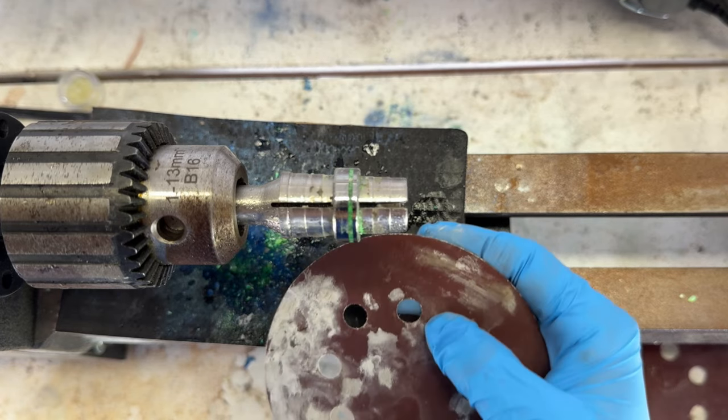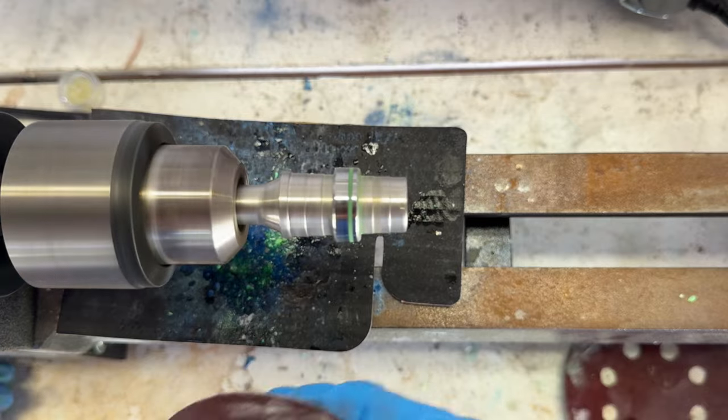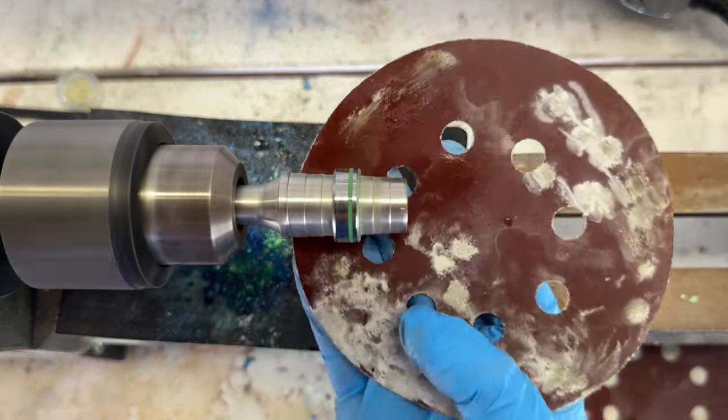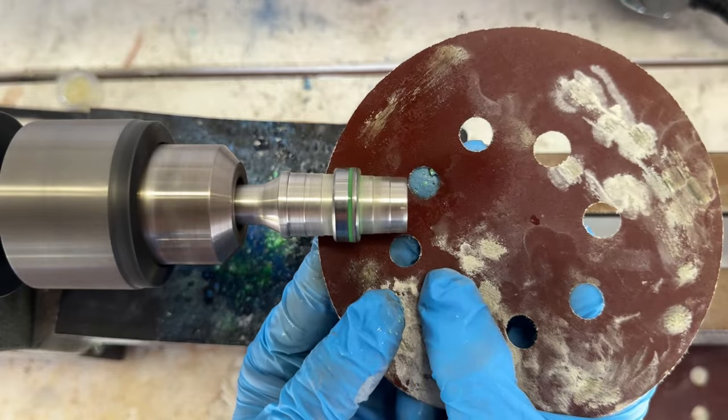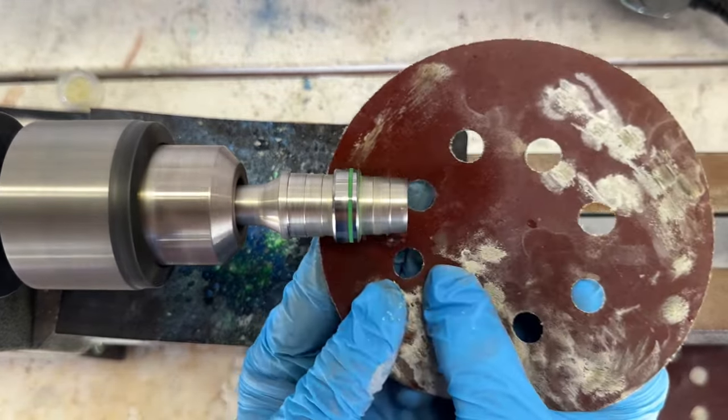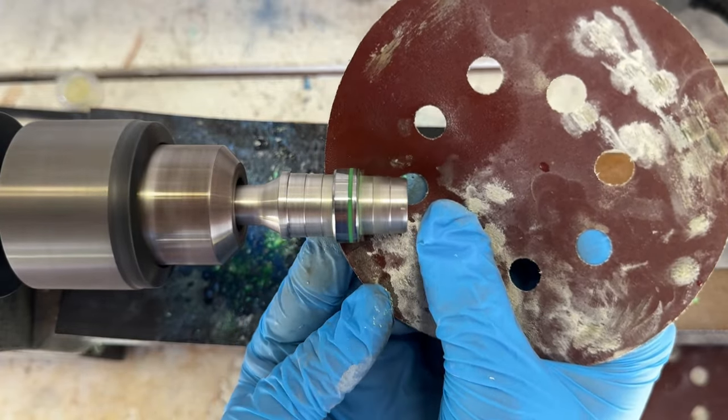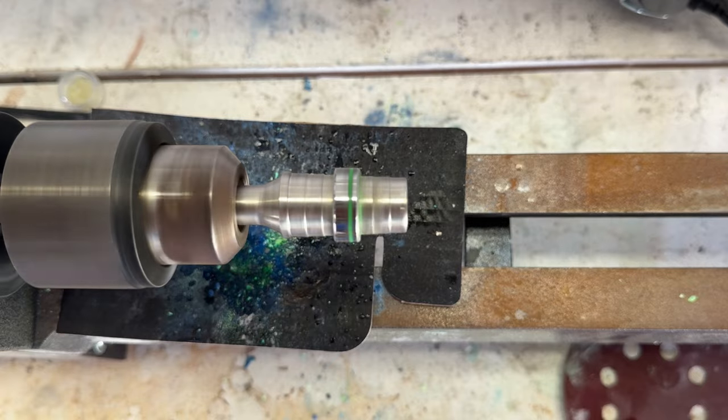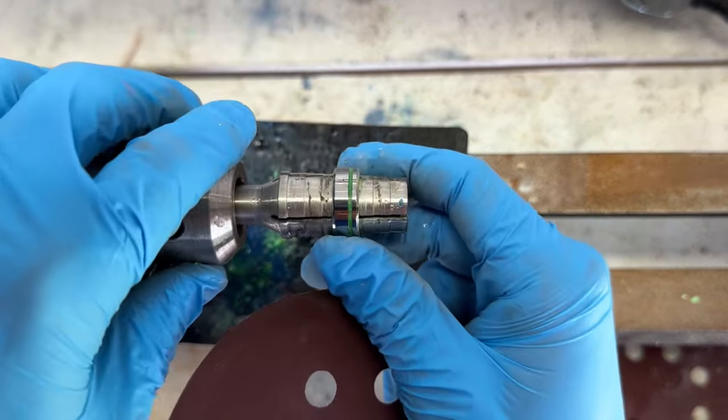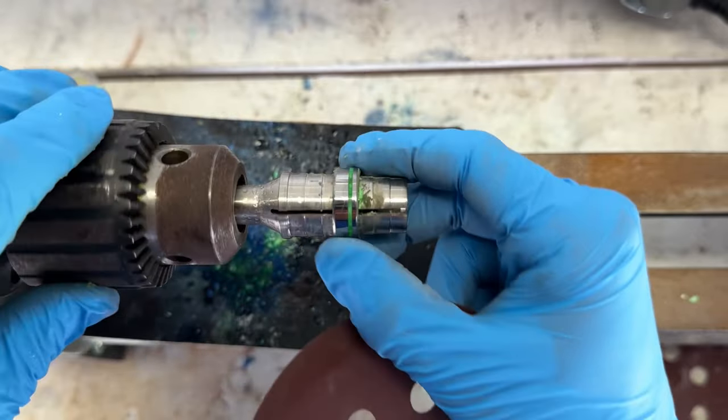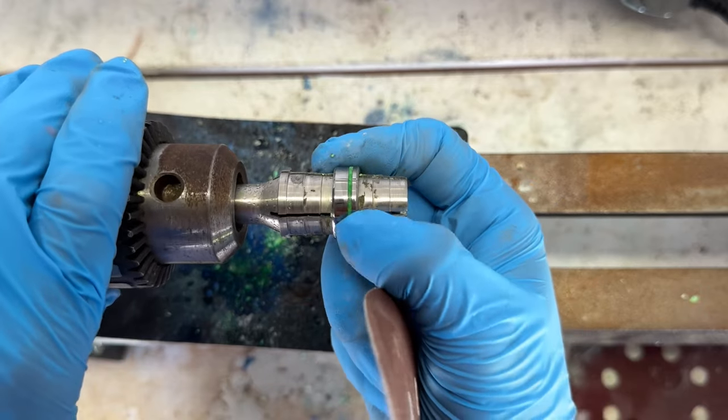All right I'm going to raise the grit from 120 up to 240. It's looking good all over. I'm going to raise the grit again up to 320 and then we'll get into a polish.